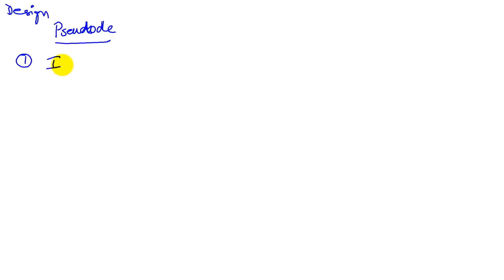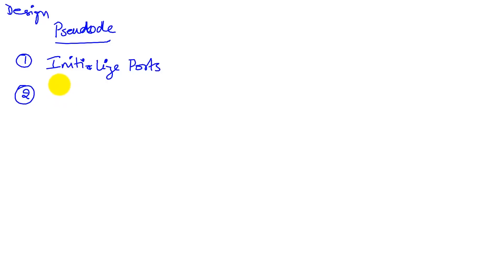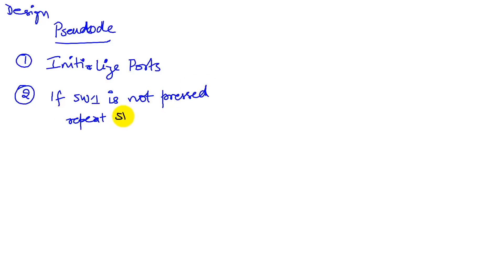My first step is going to be initialize the ports. I'm going to say 'initialize ports.' I don't care about how it's done — I just want to make a note to myself that I have to initialize the ports. The second step involves the switch: if switch one is not pressed, then repeat step two. The idea is that as long as switch one is not pressed, I keep waiting and monitoring the switch. Once the switch is pressed, I go to the next step.